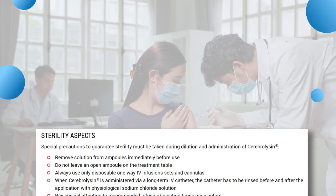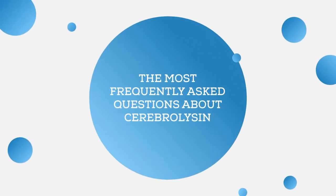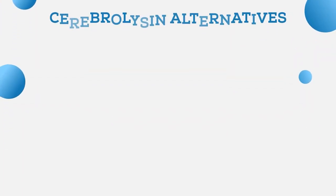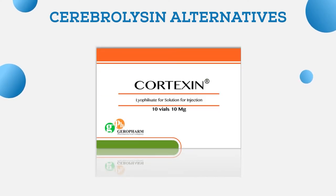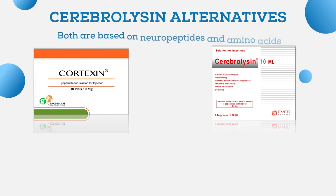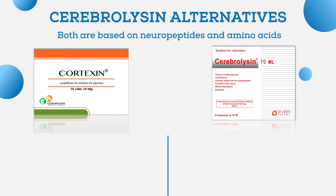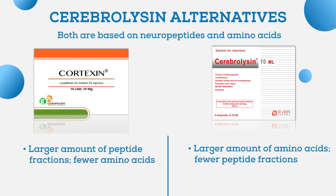Please remember that sterility precautions must be taken when making injections. Now for some frequently asked questions about Cerebrolysin. The first is about alternatives — the first peptide that comes to mind is Cortexin, the most popular alternative to Cerebrolysin. Similar to Cerebrolysin, Cortexin is based on neuropeptides and amino acids, but Cortexin has a significantly larger amount of peptide fractions and fewer amino acids.